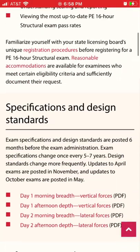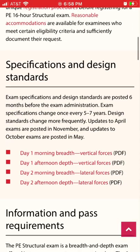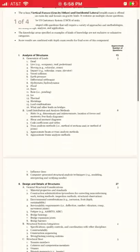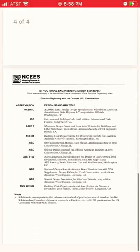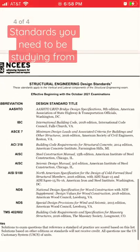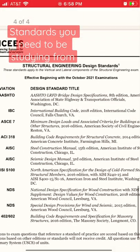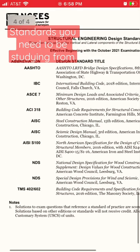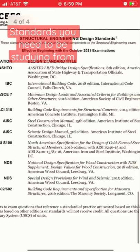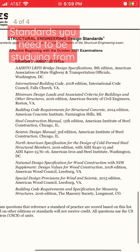I'm going to scroll down to specifications, design standards, and click on the first one. That brings you to this document, and I scroll all the way to the bottom, and there it is — the standards and provisions that they're using to create the exam that I'm taking. So I need all of these editions to study from and to prepare.